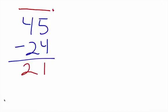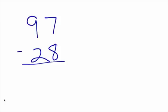Let's move on to another one. We can just do that left to right — real simple, left to right. Now we have another one here. We have 97 minus 28. So in this case, 7 is smaller than 8, so we definitely have to borrow.